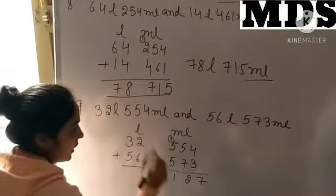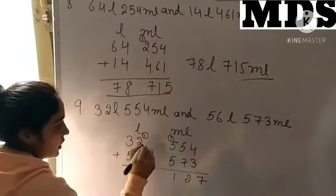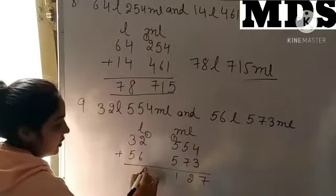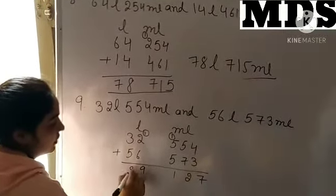5 plus 5 is 10 or 1, 11, 1 carry. 6 plus 2 is 8, and 1, 9. And 5 plus 3 is 8.